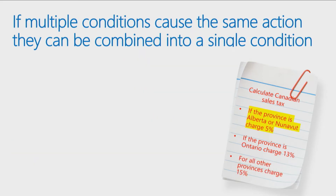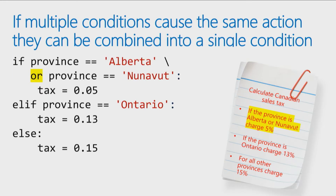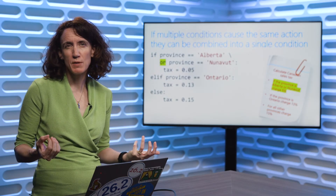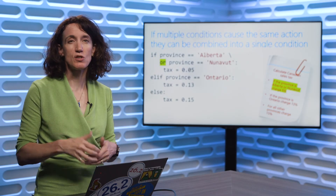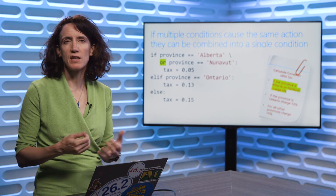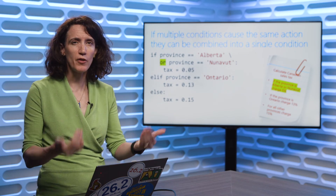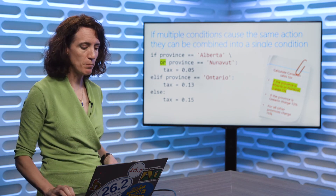If you have more than one condition that causes the same action, you can combine those together. In this case, Alberta and Nunavut actually have the same tax rate. So I can use an OR to say: if the province is Alberta OR the province is equal to Nunavut, set the tax to 5%. This saves time when multiple conditions produce the same output — you can use OR to combine them.